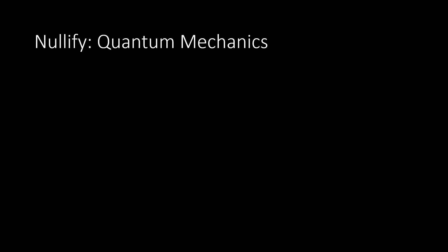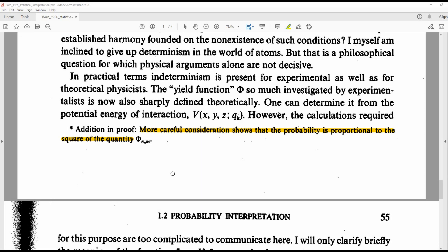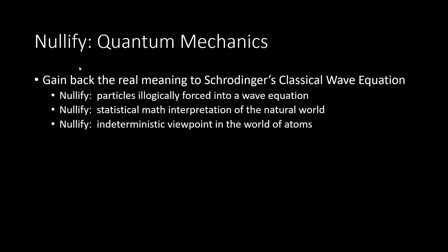Now we'll move on to quantum mechanics. What's really crazy here is that quantum mechanics hinges on one man's belief system and a footnote in his paper. Getting rid of quantum mechanics will restore the real meaning to Schrödinger's classical wave equation. Schrödinger's wave equation has nothing to do with particles — its meaning was hijacked by Max Born and quantum mechanics. Schrödinger's equation describes wave systems.